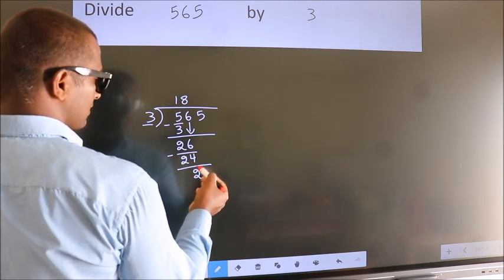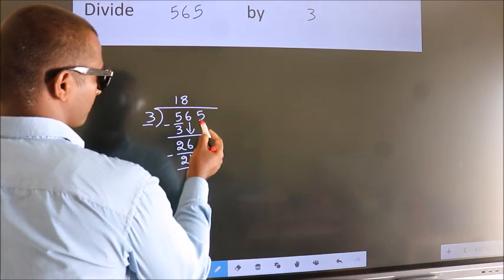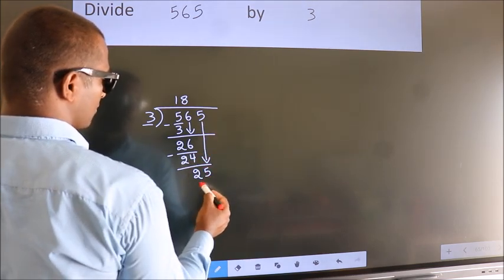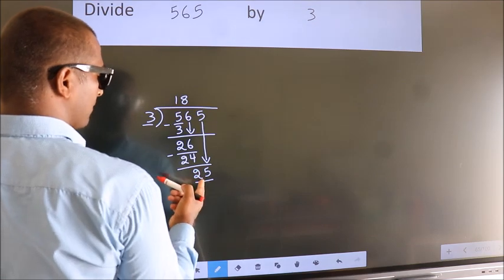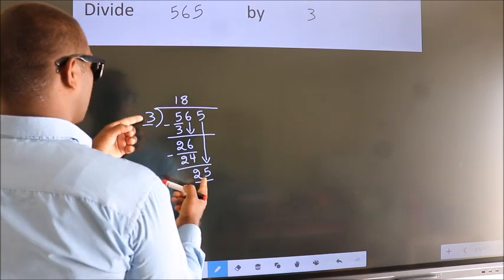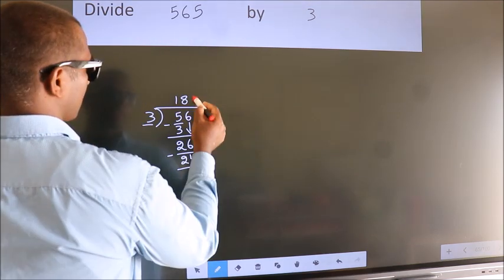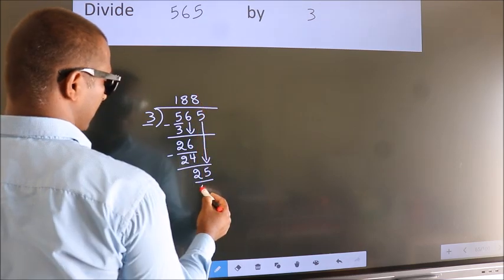After this, bring down the next number, so 5 down, making 25. A number close to 25 in the 3 table is 3 times 8 equals 24.